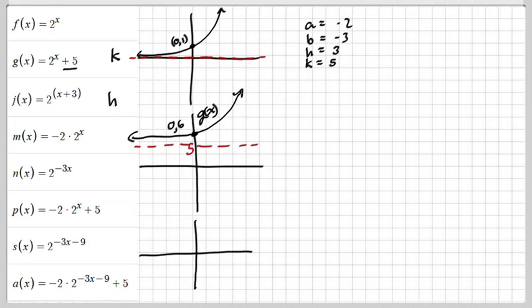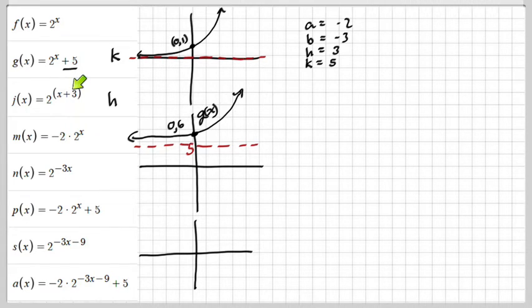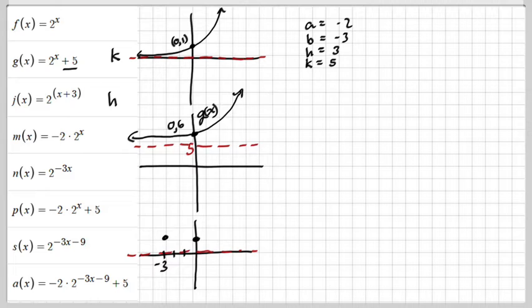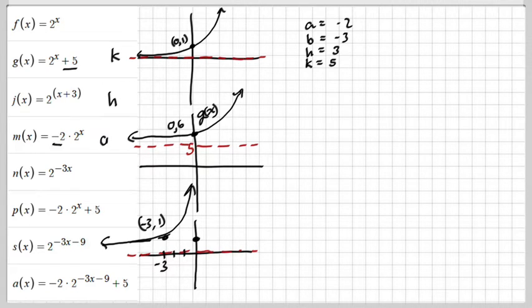Now let's look at the one with H. When H happens, it moves the function left or right. The K moves the function up or down — when it's positive you go up, when it's negative you go down. But with H, you have to think the opposite. So it says plus 3, and you might think that means move to the right three — but that's not correct. Plus 3 moves to the left. The asymptote didn't change, but the point moved. We were at (0, 1) and we go back three, so the new point is (−3, 1).